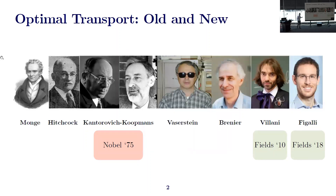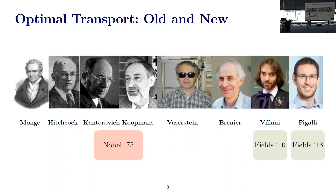Let me give you a little overview of the history of optimal transport. Optimal transport dates back to Gaspard Monge in 1781, who introduced the Monge optimal transport problem for civil engineering applications. Then the concept was applied by Hitchcock, Kantorovich, and Koopmans for resource allocation problems. Due to their contributions, Kantorovich and Koopmans received the Nobel Prize in Economic Sciences in 1975.